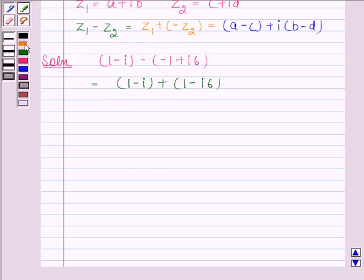Now we will apply the rule for difference of two complex numbers. That means we will now separate the real and imaginary parts. So this is equal to (1+1) plus i(-1-6), and this is equal to 2 plus i(-7).